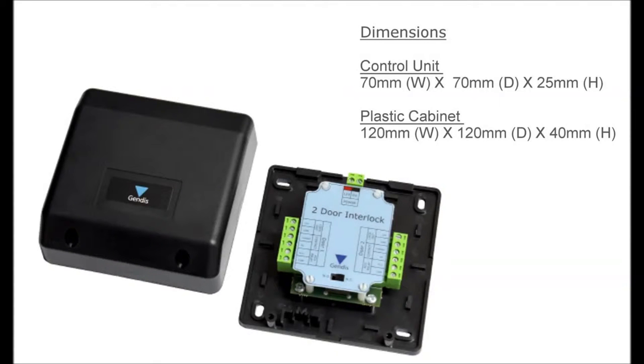This is the Gendis two-door interlock, sometimes called an airlock device. It's a small device powered by the controller or lock supply and has a simple switch towards the bottom of the wiring label that selects between normally open, as is typically a lock release, or normally closed, such as a maglock. Both doors must use the same lock type.